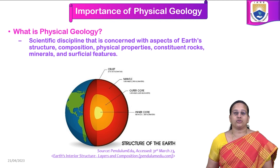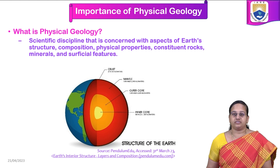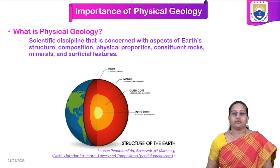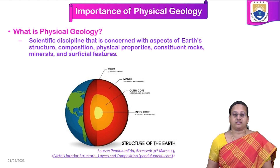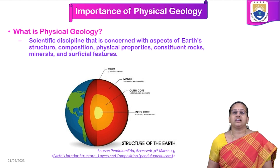The picture shown here gives us the different layers of the earth, starting from the crust which is the outermost layer. Inside there is a mantle, and deep inside we have the core, which is divided into two zones: inner core and outer core. At each level, the temperatures and pressures are different, so the state of material present in different layers of the earth is completely different.